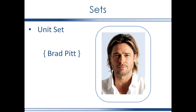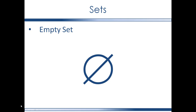A set can contain only one element — the set of Brad Pitt, for example. I call this a unit set, a set containing only one element. I'm going to point out here that this is one way of representing a set, with these curly brackets. A set can also contain absolutely nothing, no element whatsoever. This is called the empty set, and is represented with this symbol. However, a set can contain the empty set — in other words, the empty set can be an element of another set, and that would be represented with curly brackets like this.